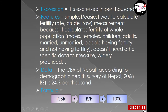CBR is a raw measurement because it includes every category: males as well as females, every age group such as children, adults, and young people, married as well as unmarried people, and people having fertility as well as those who do not. It does not need other specific data to measure, and it is widely practiced in the world.